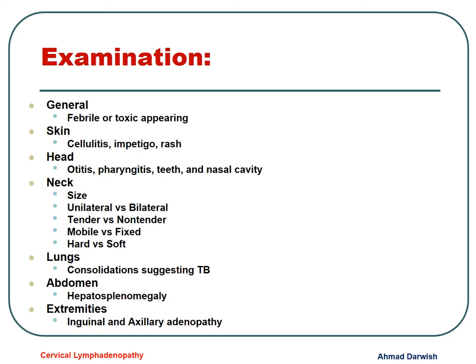For examination, we look for any toxemia and fever, the presence of infection like impetigo, cellulitis, otitis, pharyngitis, sinusitis, and tooth caries. We also look at the size of the lymph nodes, whether it is unilateral or bilateral, tender or non-tender, fixed or not, and hard or soft. We have to examine the lungs for pneumonia or cavitation, examine the abdomen for hepatosplenomegaly, and check for other lymph nodes like axillary or inguinal.